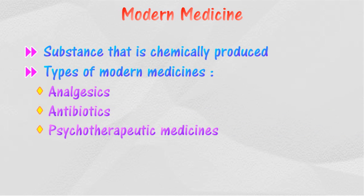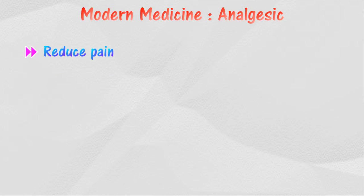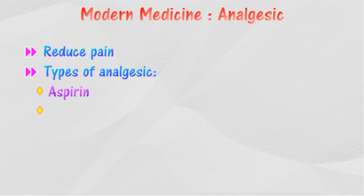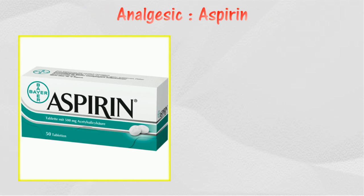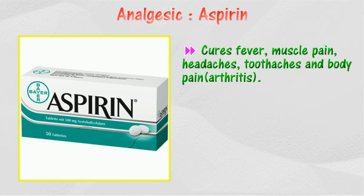Analgesics are medicines that reduce pain without causing numbness or affecting consciousness. There are three types of analgesic medicines: aspirin, paracetamol, and codeine.